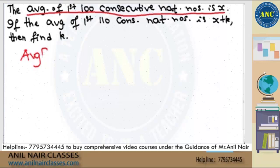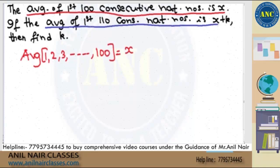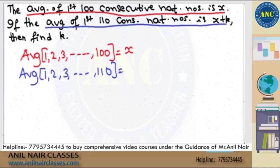The next statement says that the average of the first hundred and ten natural numbers — 1, 2, 3, till 110 — is X plus K. You need to find the value of K. What is the K value? That is the question.